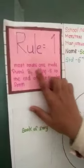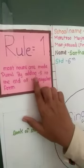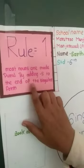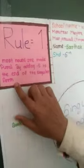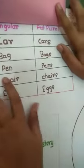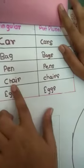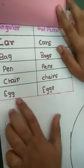There are mainly four rules of singular and plural. First rule is, most nouns are made plural by adding S to the ending of the singular form. For example: car becomes cars, bag becomes bags, pen becomes pens, chair becomes chairs, egg becomes eggs.